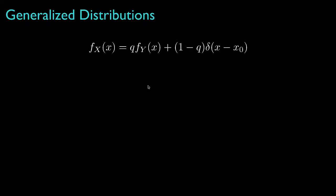In some situations, we'll have a mixture of continuous and discrete random variables. For example, x has a continuous density f sub y scaled by some value q, and a discrete density located only at the point x0, scaled by 1 minus q. This might correspond to a situation where, with probability q, the random variable x is a continuous random variable y with this density, and with probability 1 minus q, it simply takes the value x0.